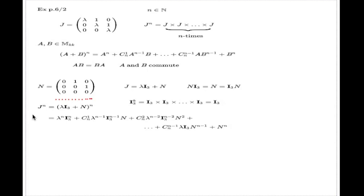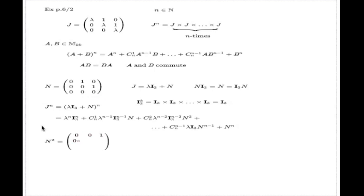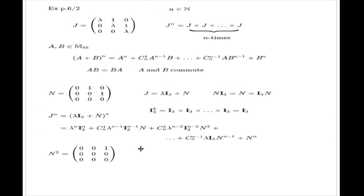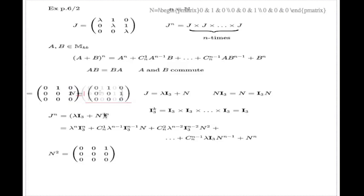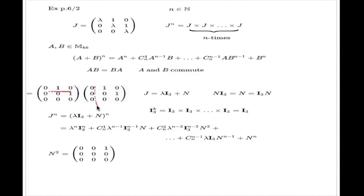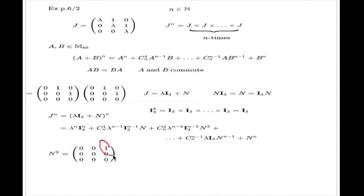Let me do one power. I claim that if I take the square of my N matrix, the result will be like this. Look: these are two copies of N. If you multiply the first row by the first column, you get zero. First row by second column — again zero because the ones don't align. When you multiply the first row by the last column, the positions of the ones match up, giving one here. If you check everything, you realize that N squared is just this matrix.